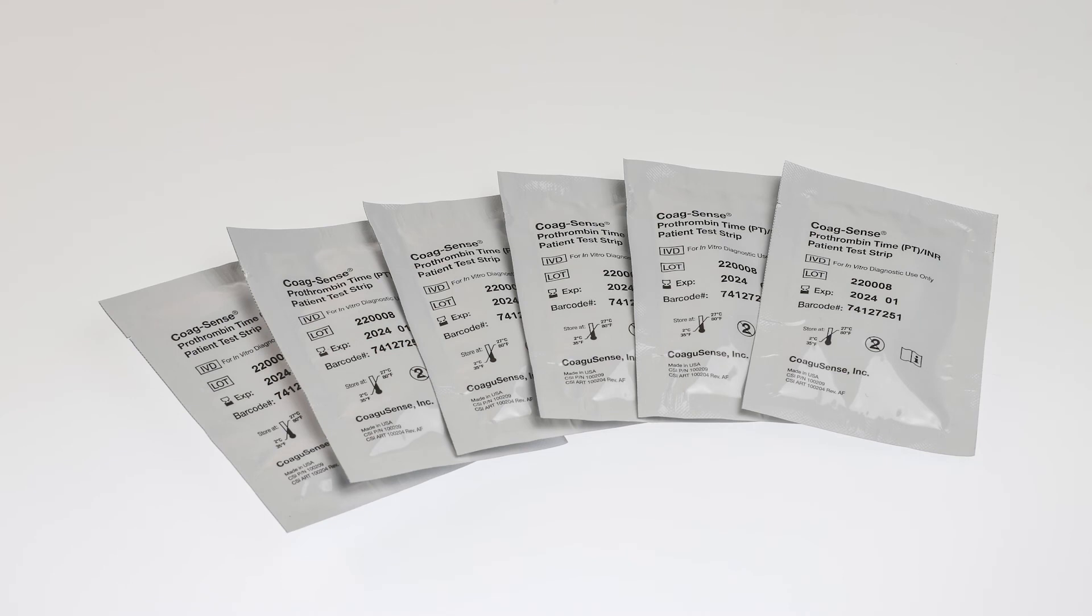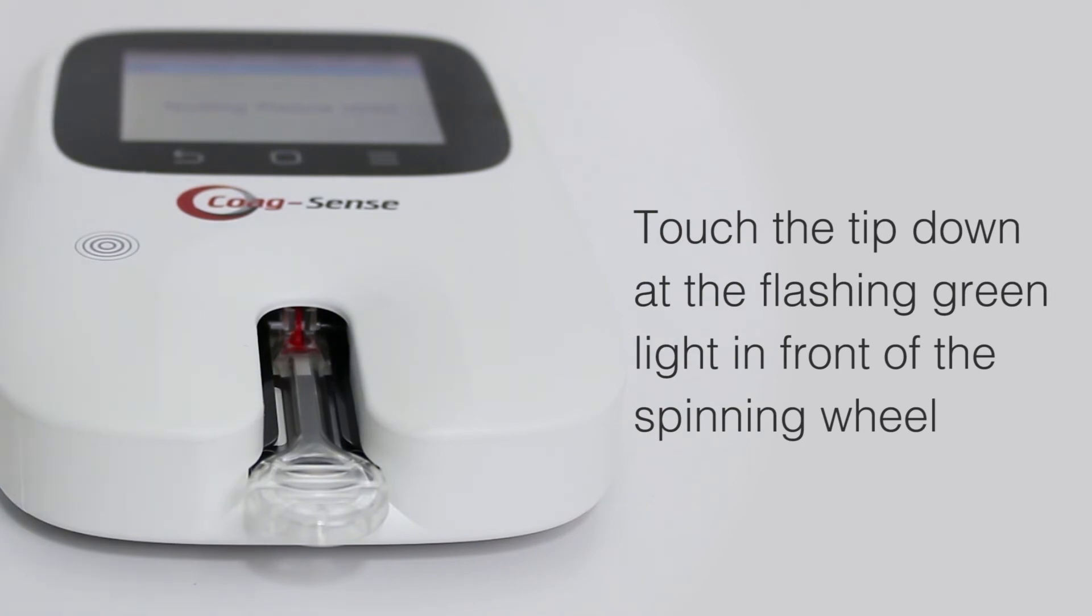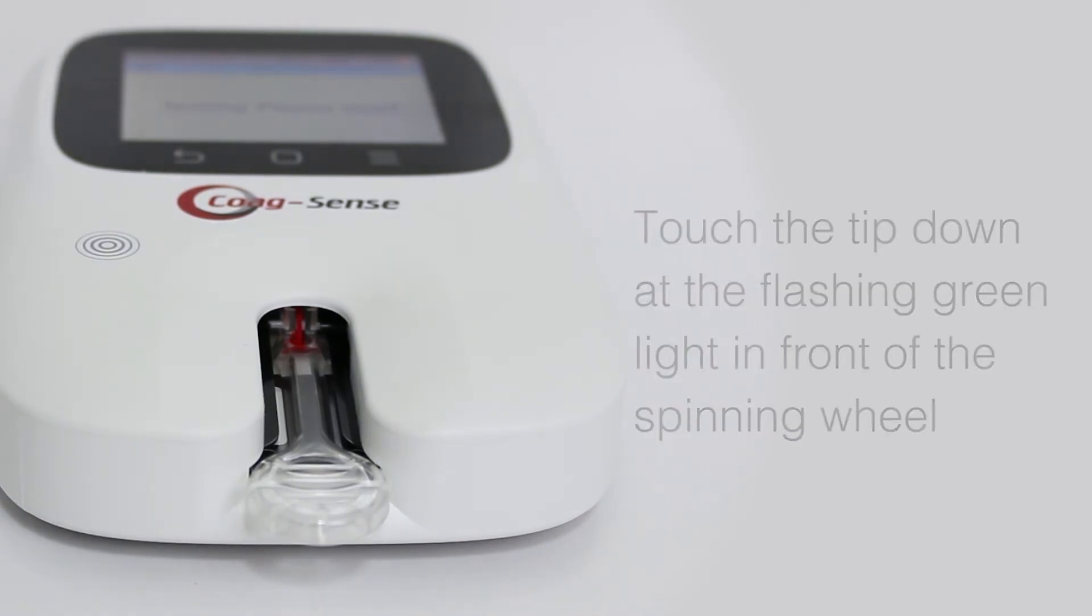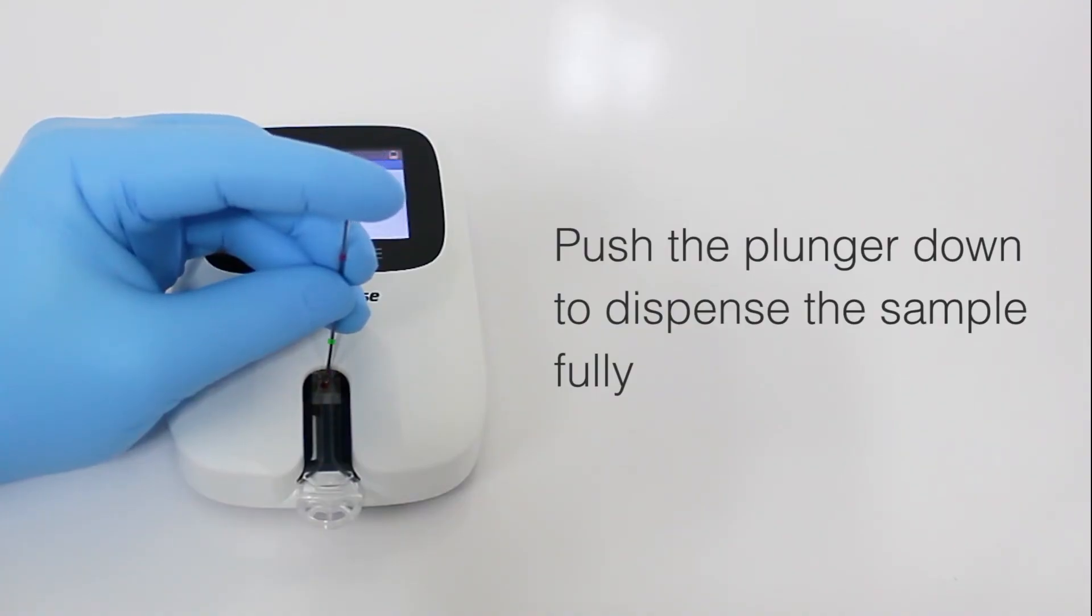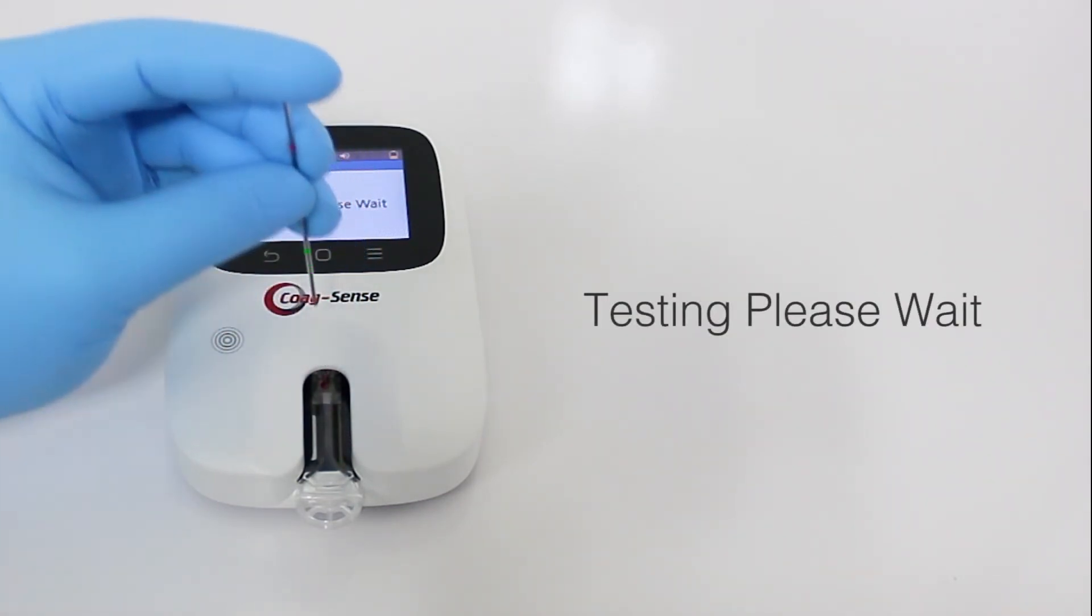Test strips are packaged individually so that all strips are equally fresh. Just a 10 to 12 microliter drop of blood applied to the test strip using a transfer tube ensures an accurate sample, reduces errors, waste, and contamination.